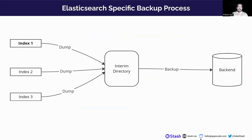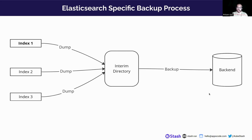In the Elasticsearch-specific backup process, KubeStash uses RESTIC to perform the backup logic. However, RESTIC doesn't support piping multiple dump outputs in a single command. So what we do is use a directory within an interim volume, which is actually a Kubernetes persistent volume, and then we take the backup of that directory. This is the specific backup process for Elasticsearch.